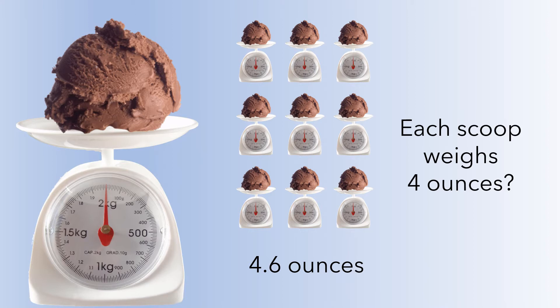Pause the video and think about what you would conclude. Now, if the average had been exactly four ounces, you wouldn't have doubted the claim. And if the average had been 9.2 ounces, you probably would have doubted the claim. And this is the basic reasoning behind hypothesis testing — you ask yourself: is the observed statistic different enough from the claimed weight that you would doubt the claim?